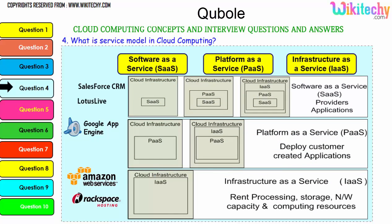To explain further: with Software as a Service, the cloud infrastructure, software, and operating system are all managed for you. With Platform as a Service, the platform is given to you on a server and you can put any application or software you want. With Infrastructure as a Service, a server is given to you and you can install any application you want. Examples include Lotus Live and Salesforce CRM for SaaS; Windows Azure and Google App Engine for PaaS; and Amazon Web Services and Rackspace Hosting for IaaS.